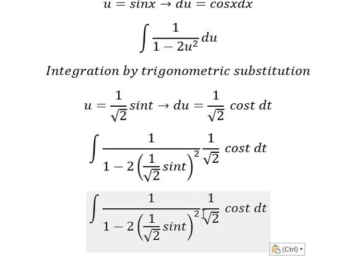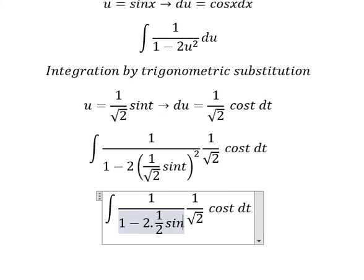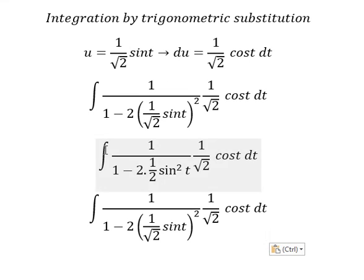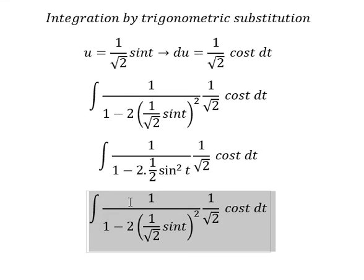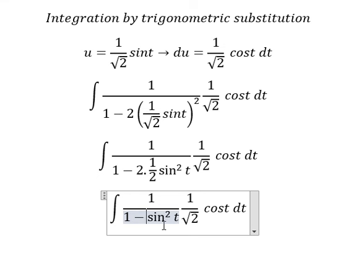So we have 1 over the square root of 2. We have 1 over 1 minus 2 times 1 over 2 sin squared t times the square root of 2.